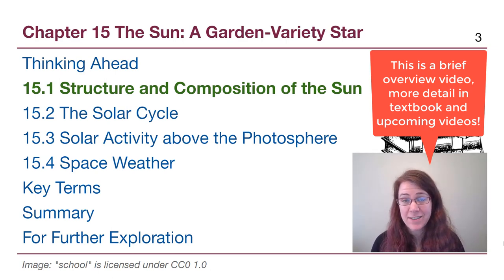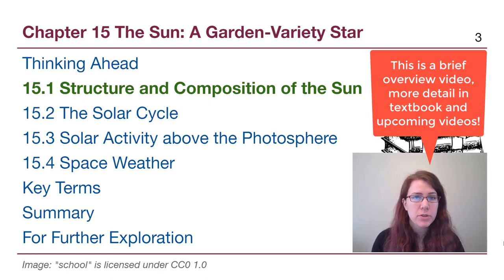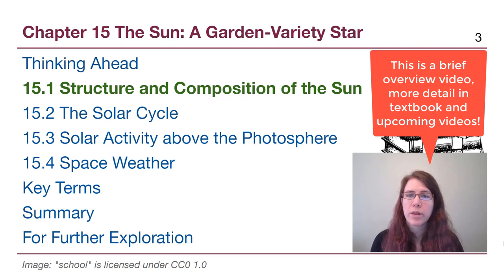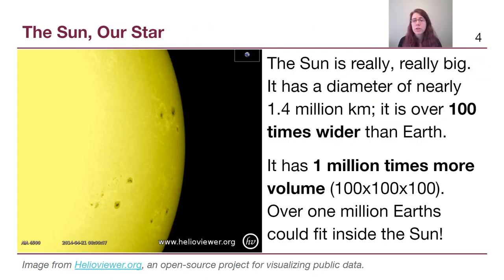Welcome to chapter 15 in OpenStax Astronomy. In this video, we are going to introduce several terms that we will be seeing in this chapter, along with how they relate to one another. This whole chapter and the next one are both about our nearest star, the sun. The sun is part of our solar system and it's what we need in order to be able to have life here on Earth.